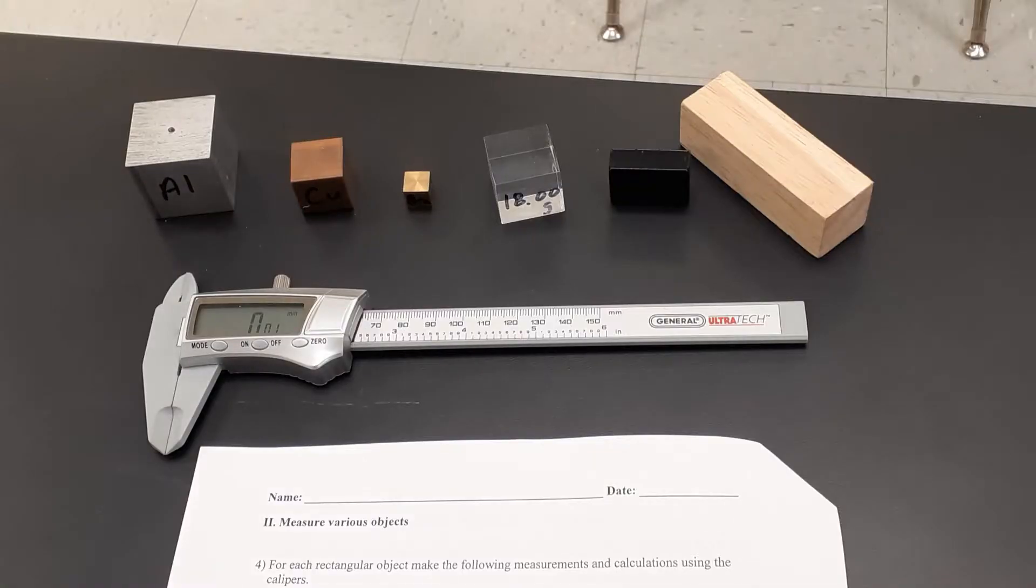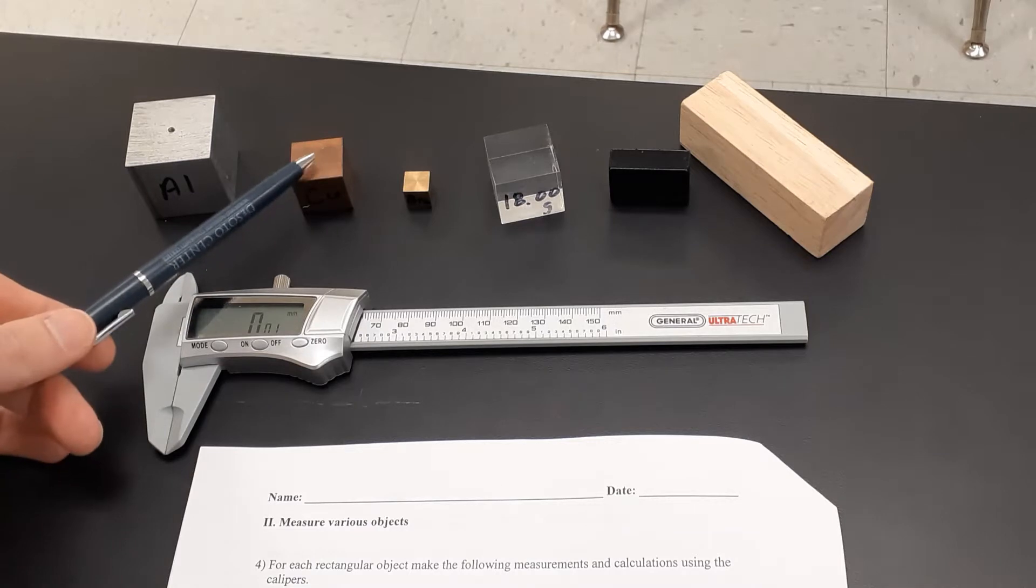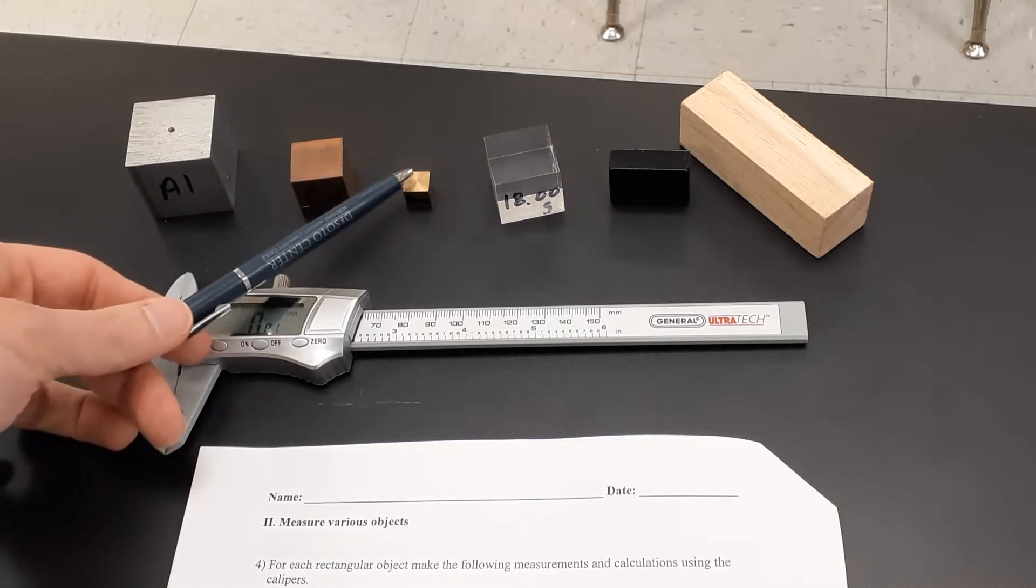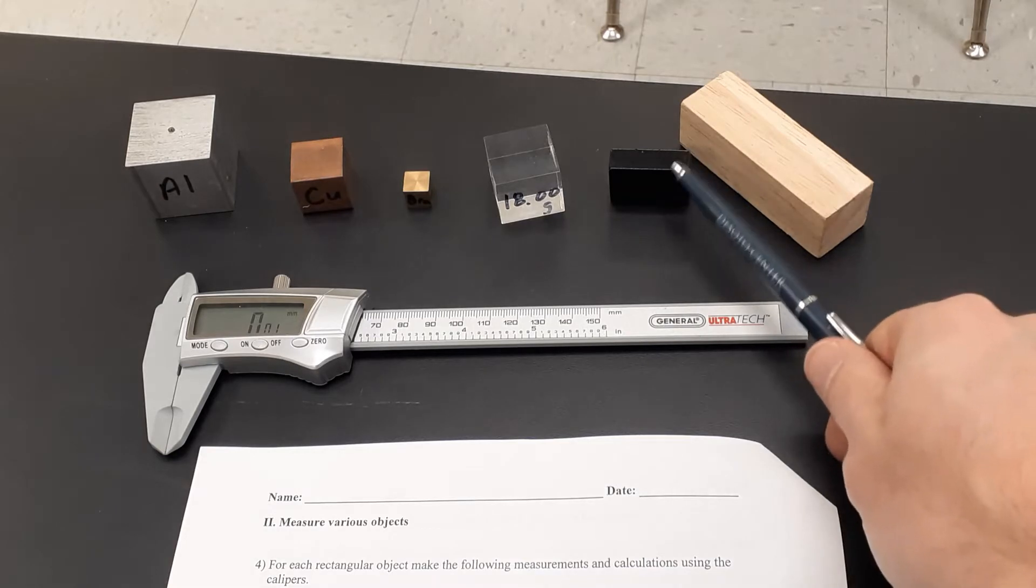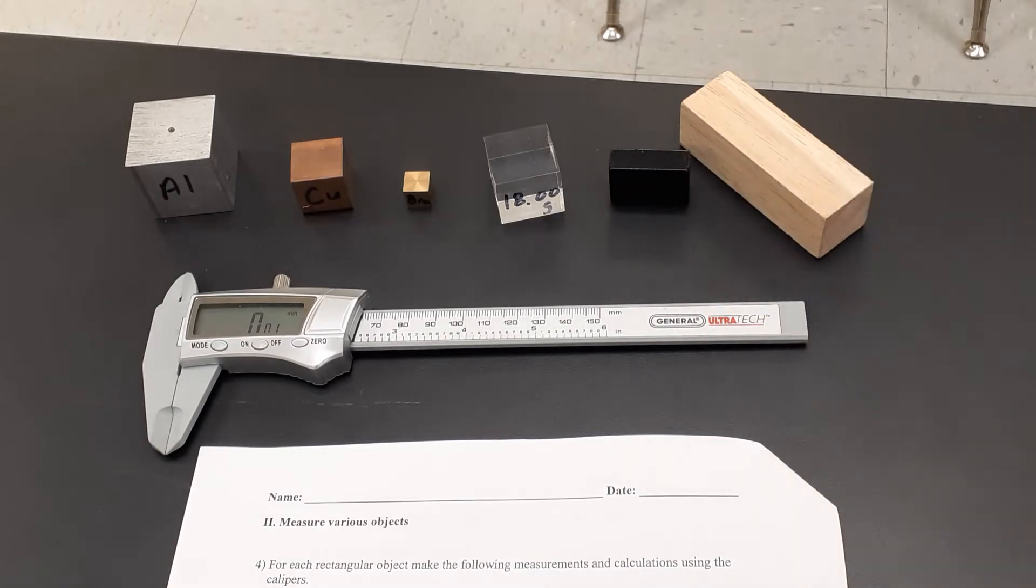Now we're ready to start measuring your cubic style objects first. So we have a block of aluminum, a block of copper, a piece of brass, a plastic cube, a steel cube that's painted black, and then a wooden cube over here. Of course, these don't have to be perfect cubes like a square. They're just rectangular shapes.